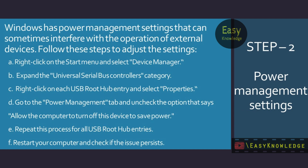Step 2: Power Management Settings. Windows has power management settings that can sometimes interfere with the operation of external devices. Follow these steps to adjust the settings. Right-click on the Start menu and select Device Manager. Expand the Universal Serial Bus Controllers category. Right-click on each USB root hub entry and select Properties.